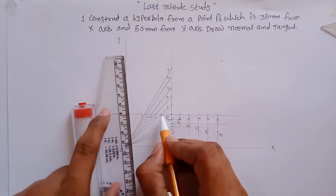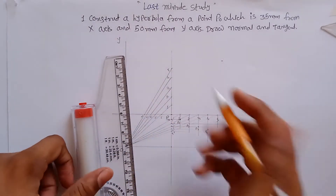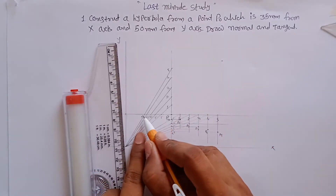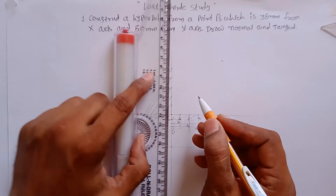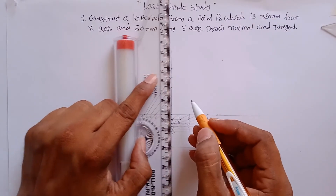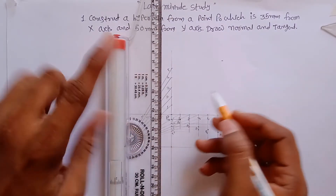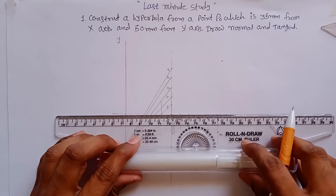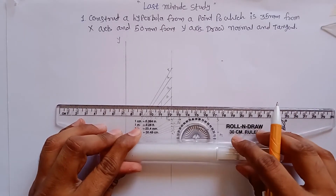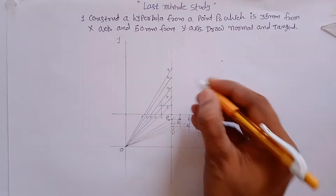Follow the same procedure for the other segment, but remember: draw vertical lines from one-dash to five-dash, and horizontal lines from one to five. For example, draw a vertical line from one-dash and a horizontal line from point one.